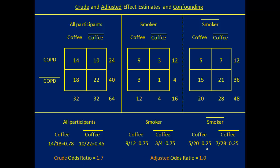Sometimes the odds ratios found within each level of the conditioning variable will not be the same. In this case they were. If the within-level odds ratios are similar, we can combine them into an adjusted odds ratio. But if they are very different from each other, we have another phenomenon called effect modification, which will be discussed in future videos.